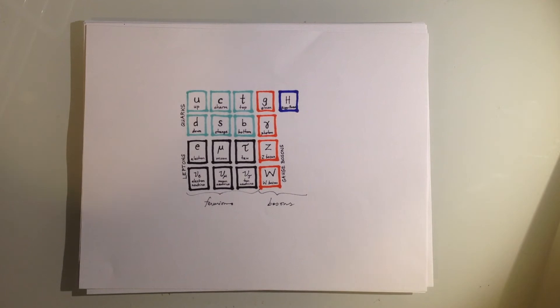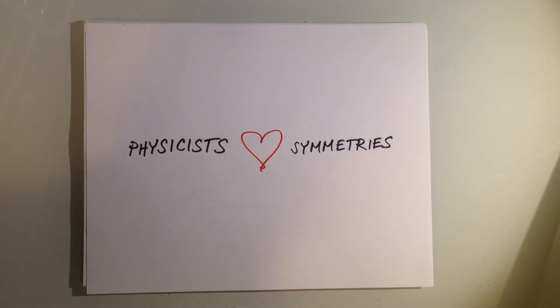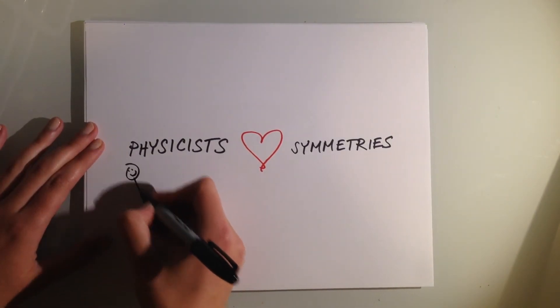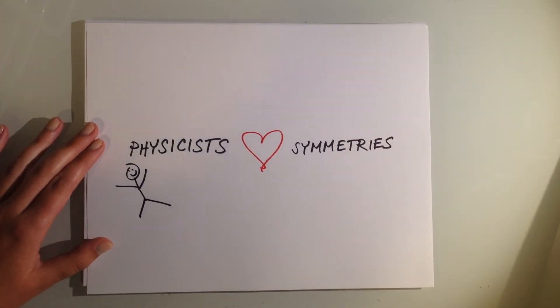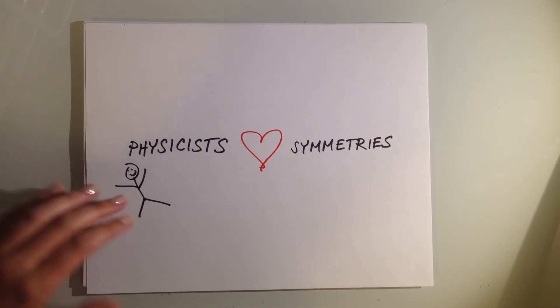Though you probably can't tell from this picture, the standard model has a ton of symmetries. It's one of the reasons physicists like it so much. Physicists love symmetries. These symmetries help to answer a lot of questions about how particle physics works. But we still have a few nagging questions that the standard model just can't answer. So what do we do? Introduce a new symmetry. And what should we call it?